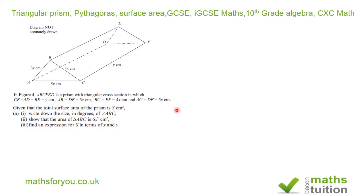Now moving on, it says given that the total surface area of the prism is S centimeters squared, write down the size in degrees of angle ABC, show that the area of ABC is 6X squared centimeters squared, find an expression for S in terms of X and Y. And it then says, given also that S is equal to 144, show that Y is equal to 12 minus X squared over X.